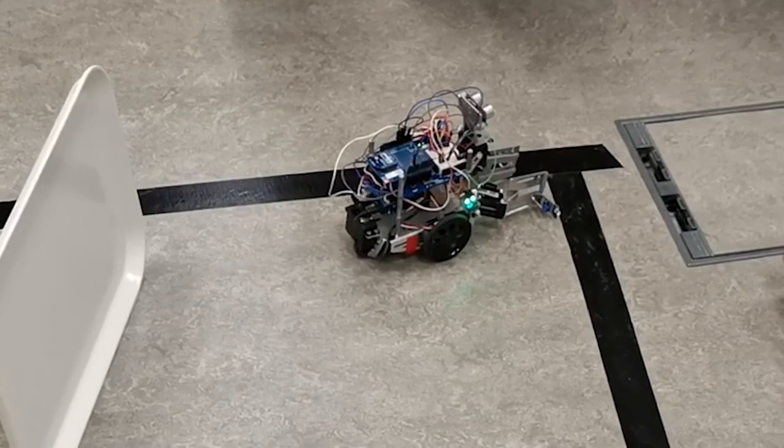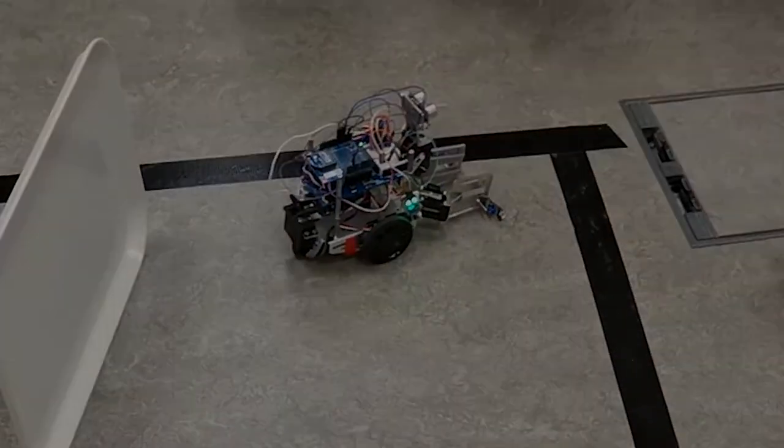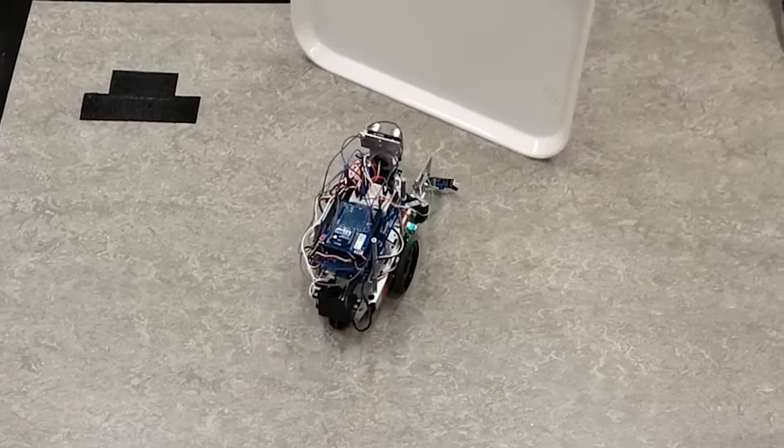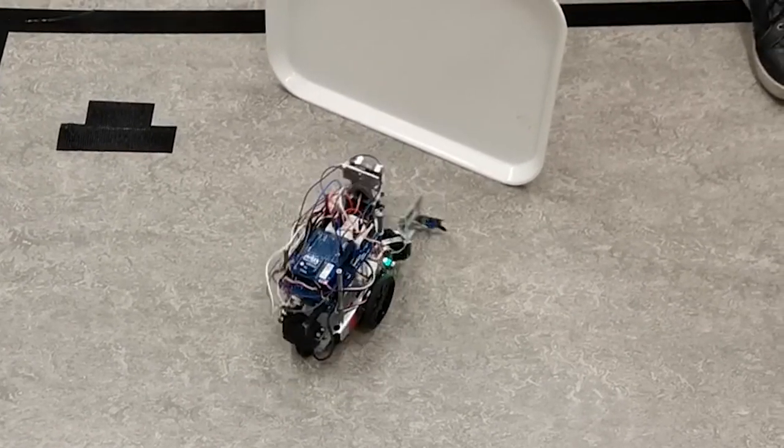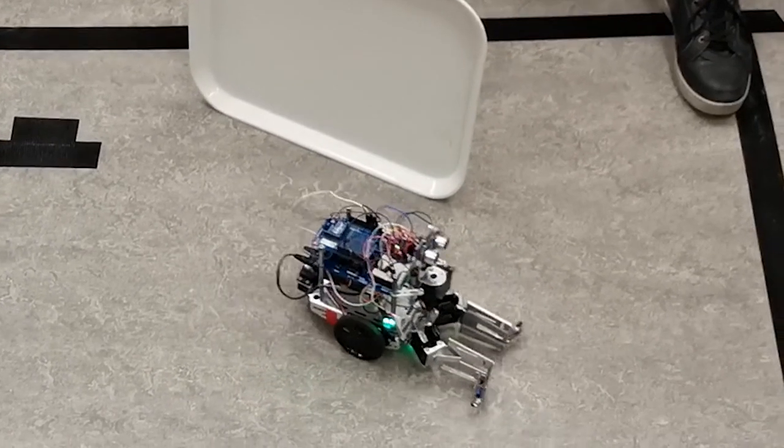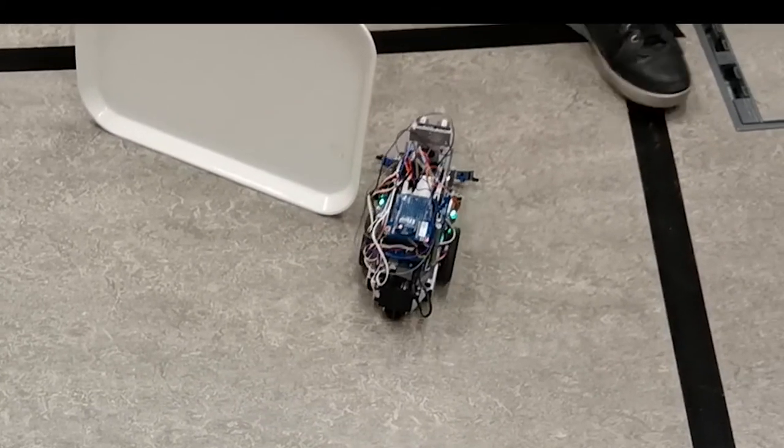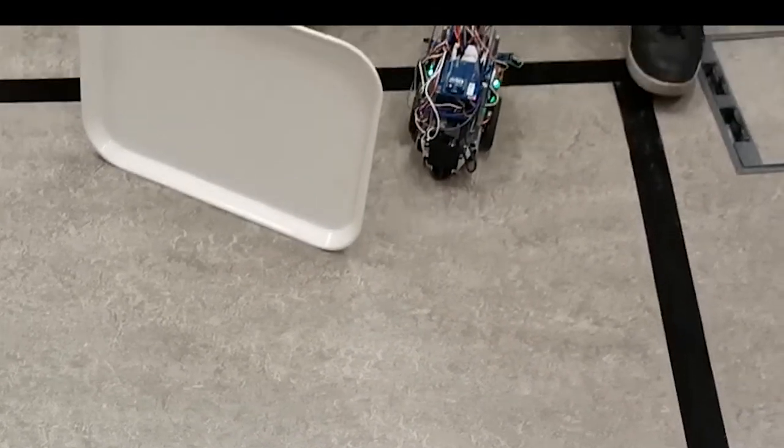Otherwise, the bot will turn left to face the original direction and check the ultrasound sensor once more. If an object is still blocking the bot, it will turn right and repeat the same procedure. Once the bot finds an opening, it will move forward and continue exploring.